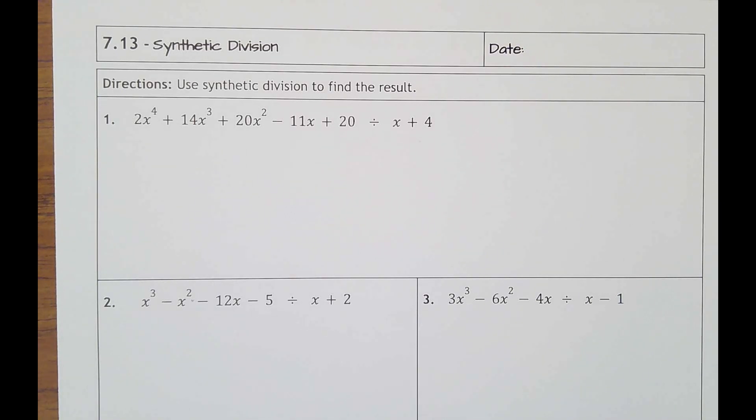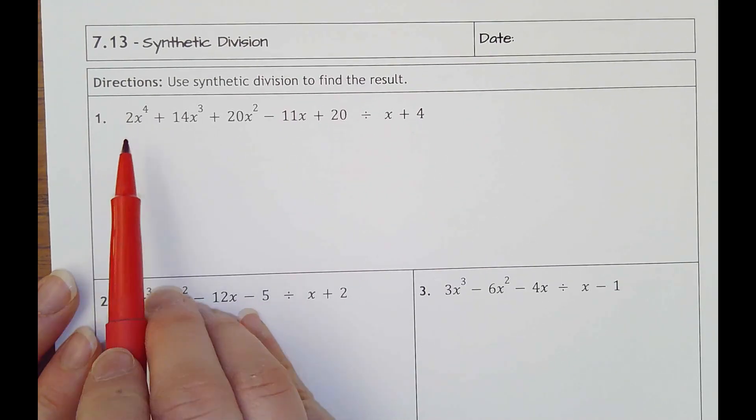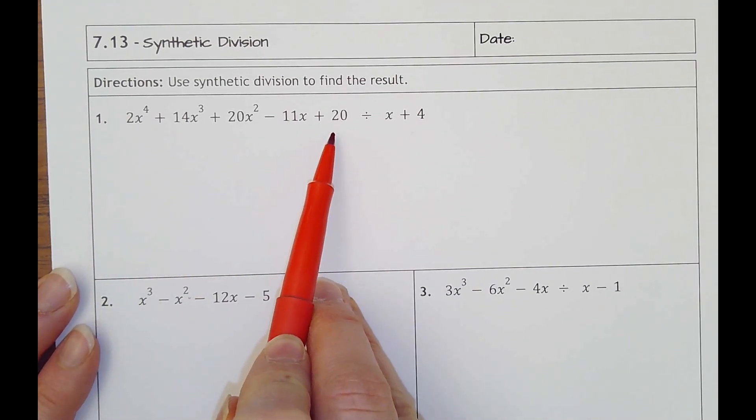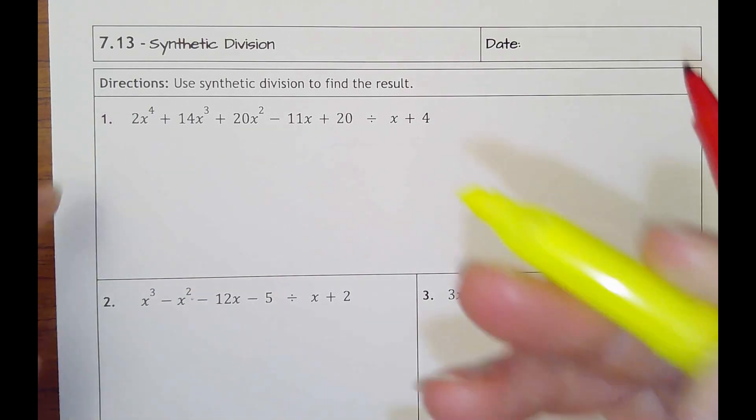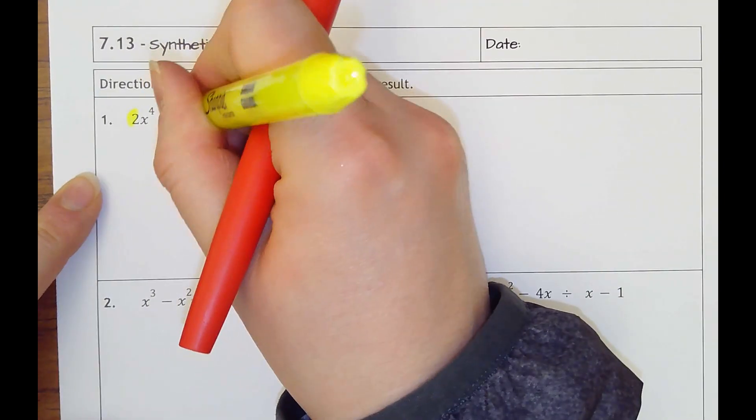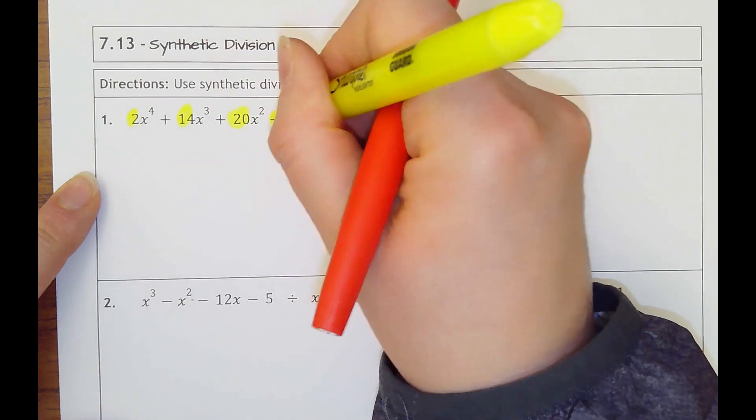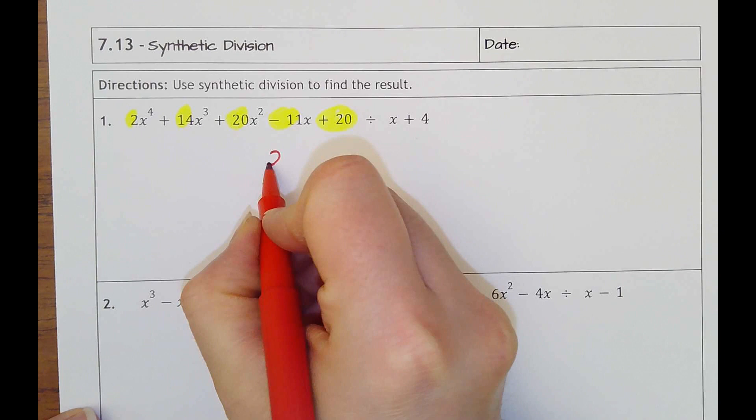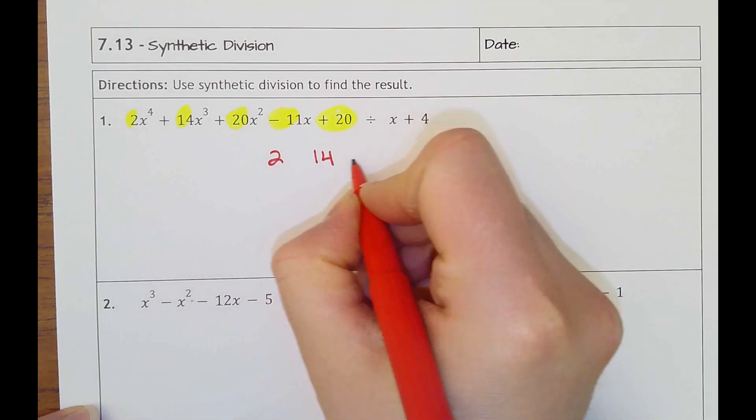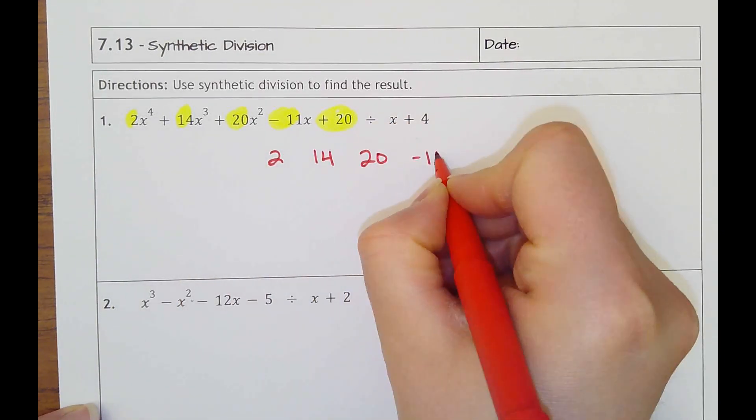Instead of doing long division, it's a really simple process. You take this polynomial that's getting divided, that's your dividend, you take all the coefficients - coefficients are the numbers in front - so 2, 14, 20, negative 11, positive 20, and I'm going to just write those here: 2, 14, 20, negative 11, 20.